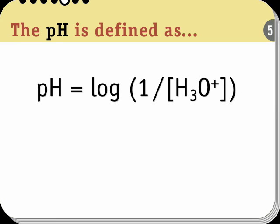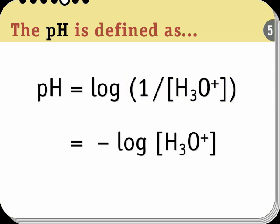The pH is defined as the base 10 logarithm of 1 over the hydronium ion concentration for the solution. Or to write it in an equivalent way, it is the negative of the base 10 logarithm of the hydronium ion concentration. If you need to review logarithms, please see the appendix of your textbook.